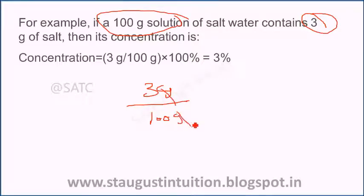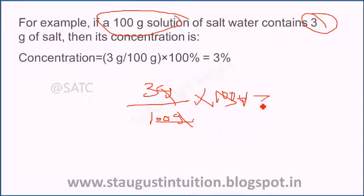For example, if you calculate the concentration: grams get cancelled, 3 divided by 100 into 100 — that means 3 percent. So 3 percentage is the concentration.